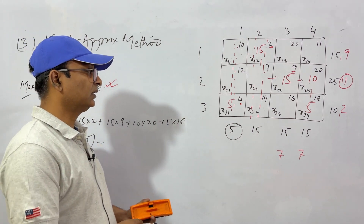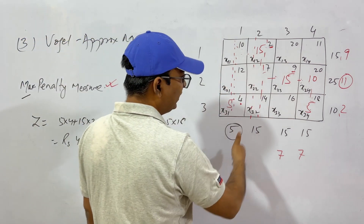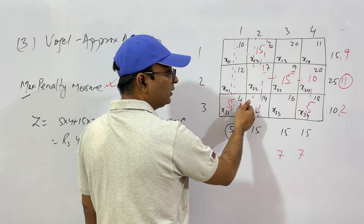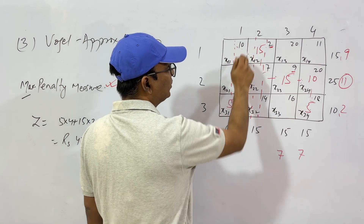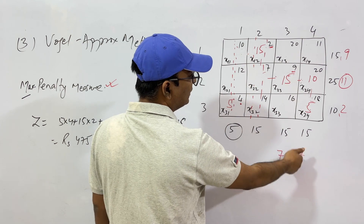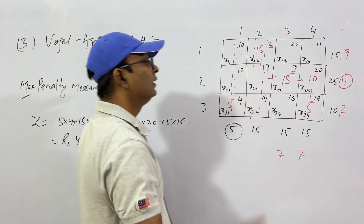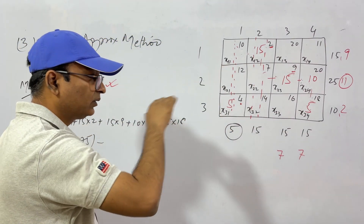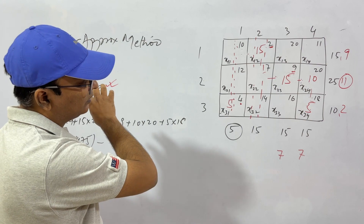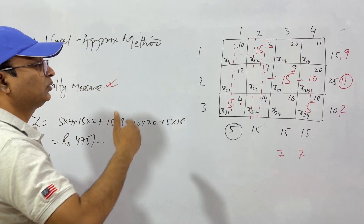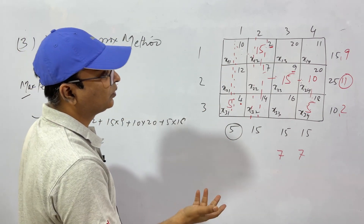To recap the Vogel approximation method: find the penalty measure — for every column, take the least cost per unit and the next one and subtract (e.g., 10 minus 4 = 6, 7 minus 2 = 5). Select the row or column with the maximum penalty measure and allocate the maximum demand from that supply unit. When demand is fulfilled, cross out that row or column and continue until all supply and demand is balanced.